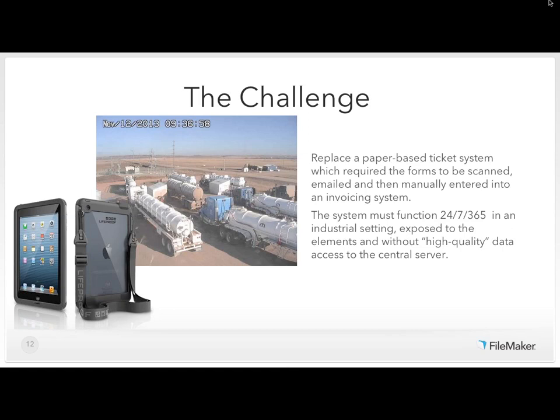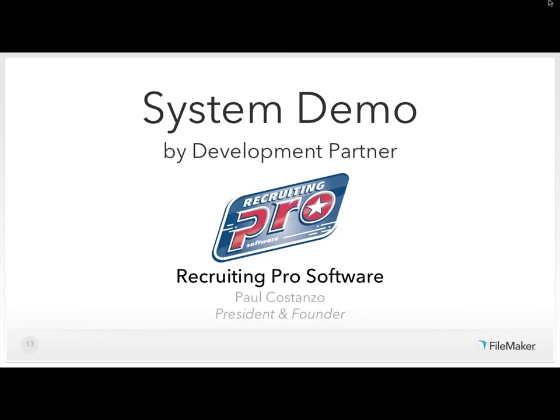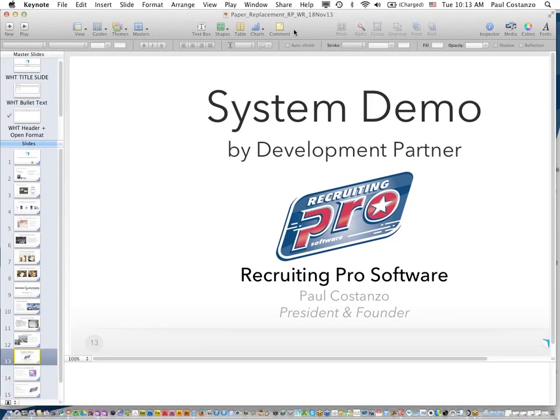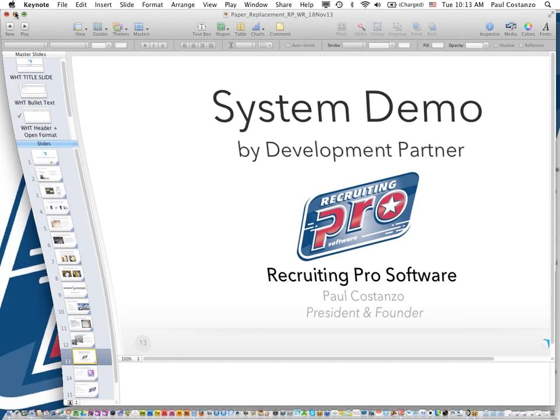We've had to find a protective case for the iPads because in North Dakota, temperatures range from negative 50 in the winter to 100 degrees in the summer, with rain and snow. They've still been able to use the iPads regardless of weather conditions. It's been a fantastic implementation. I'll now turn the time over to Paul, who will show how the system works.